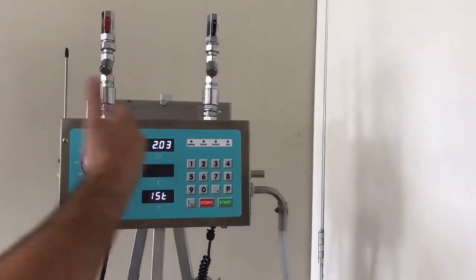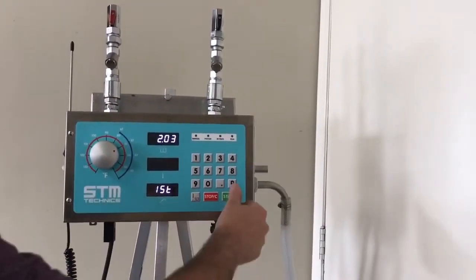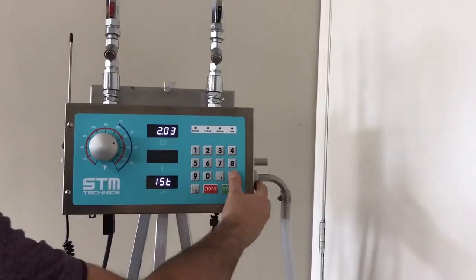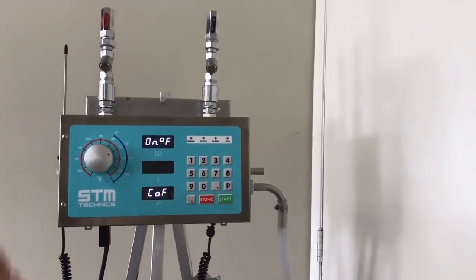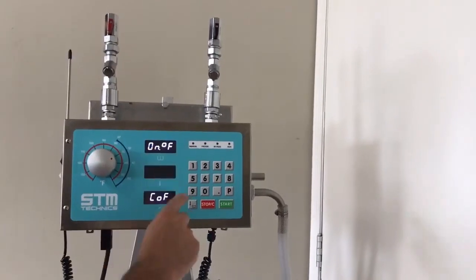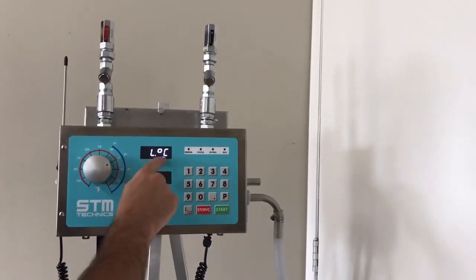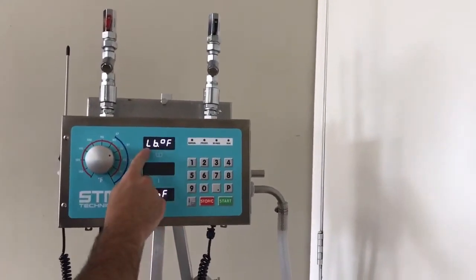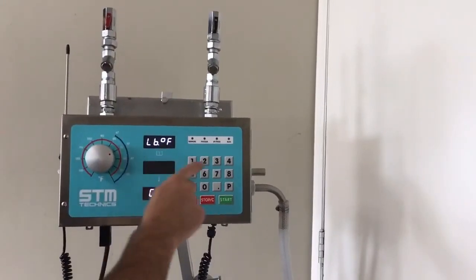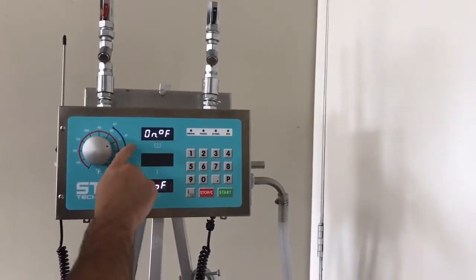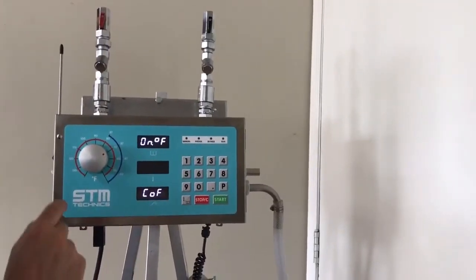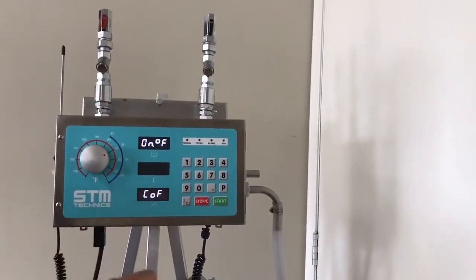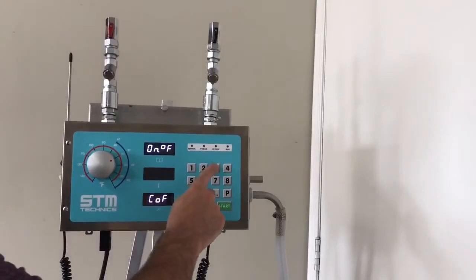To scroll through our internal parameter windows we press the P button. Now this is an important parameter to check. The unit comes with three settings. Number one is in liters and Celsius. Number two is in pounds only and in Fahrenheit. Number three is in pounds and ounces and Fahrenheit. If you're dispensing in pounds and ounces you should use setting number three.